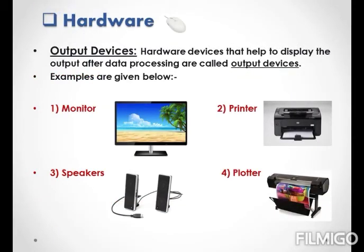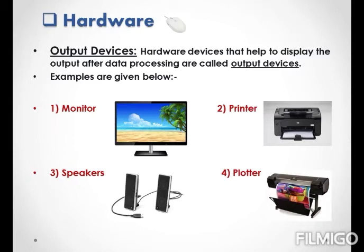Now let us start with the next topic of hardware, that is output devices. The hardware devices that help us to display the output after data processing are called output devices. The devices on which we get the output are also known as output devices. Let us study some examples. The first is monitor. It displays information on a screen. A monitor looks similar to a television and is also known as a visual display unit.